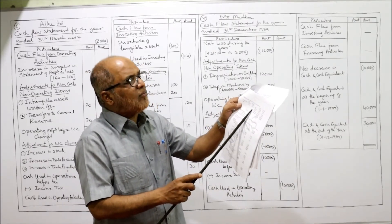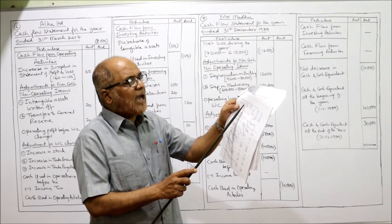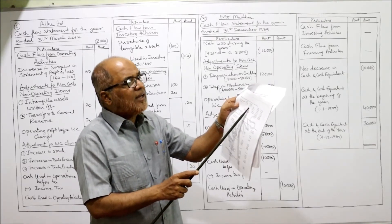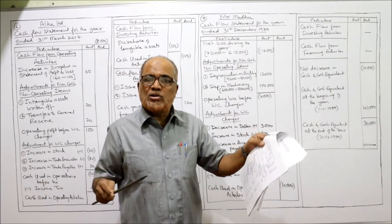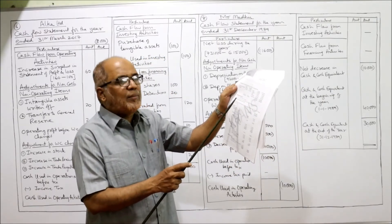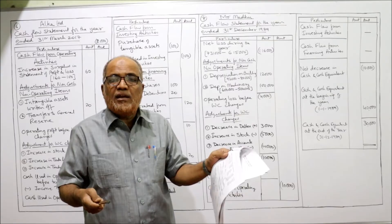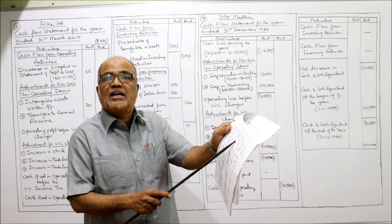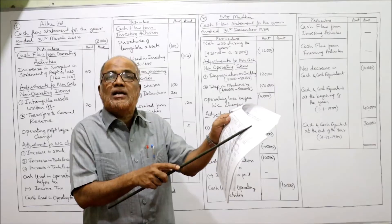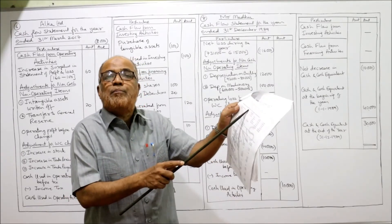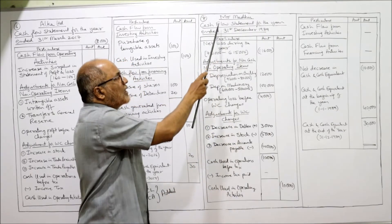In our problem, beginning of the year (1st January 1989) capital was 7,31,000; end of the year capital was 6,15,000 — capital decreased. The two reasons could be loss or drawings. However, the additional information states there were no drawings. Therefore, the reason must be a loss. There is no general reserve or profit and loss account because it is a sole trading concern — profit or loss is adjusted directly in the capital.